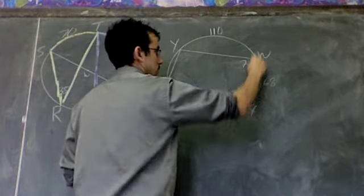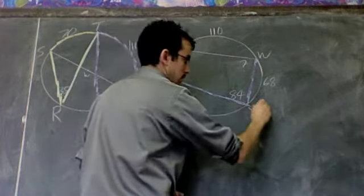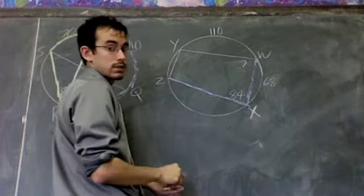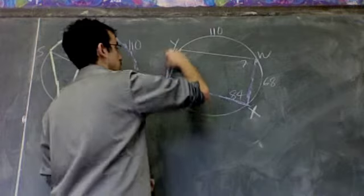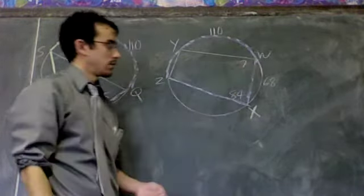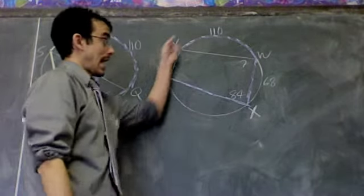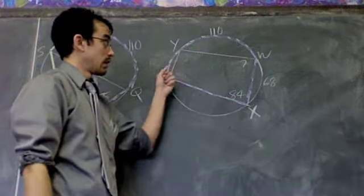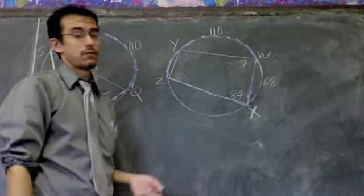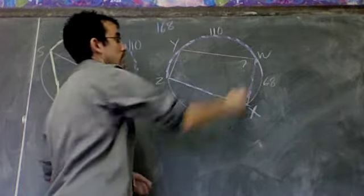X is the vertex. Z and W are my endpoints. So I'm going to trace that—Z all the way to W. I know that my inscribed angle is 84, and the inscribed angle is supposed to be half of that arc. So if this is 84, that arc should be 84 times 2. Double 84. If I multiply 84 times 2, I get 168.